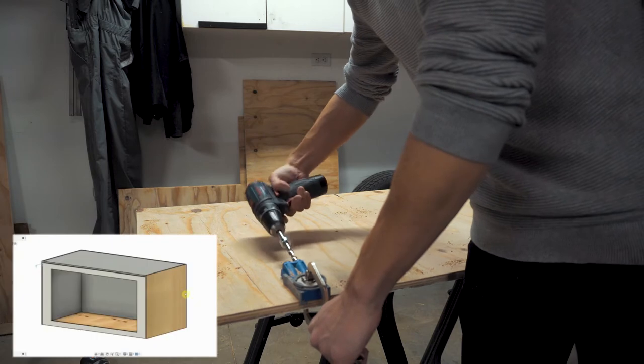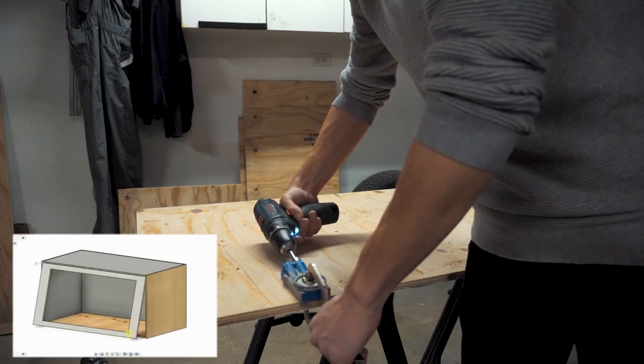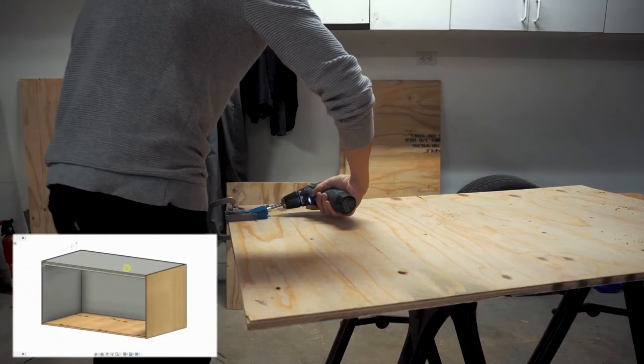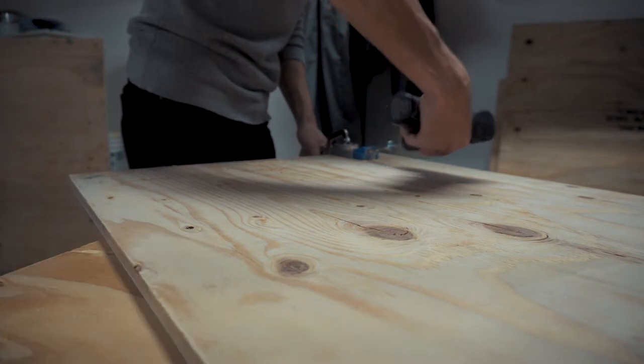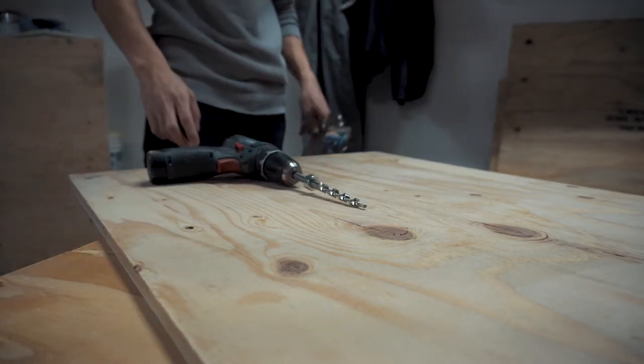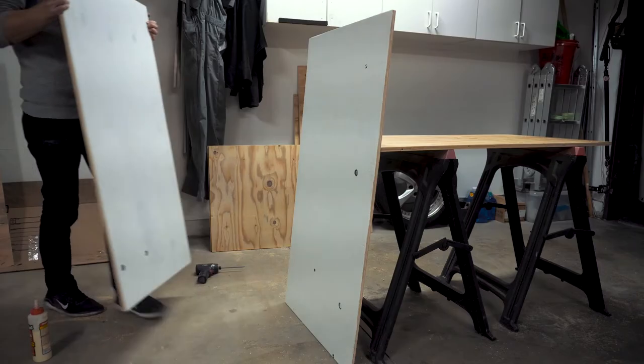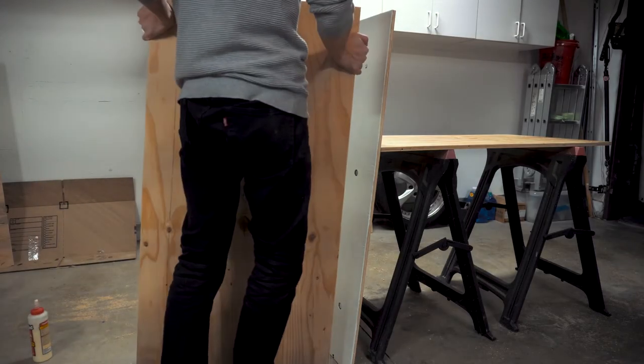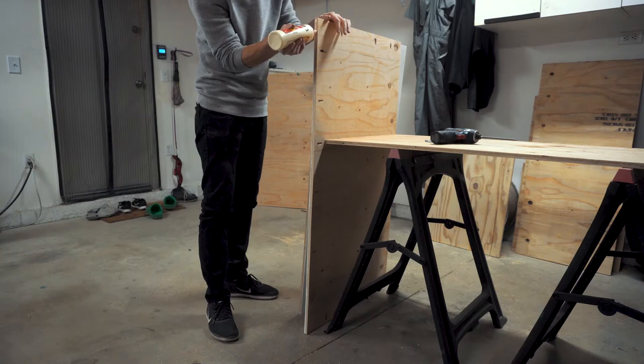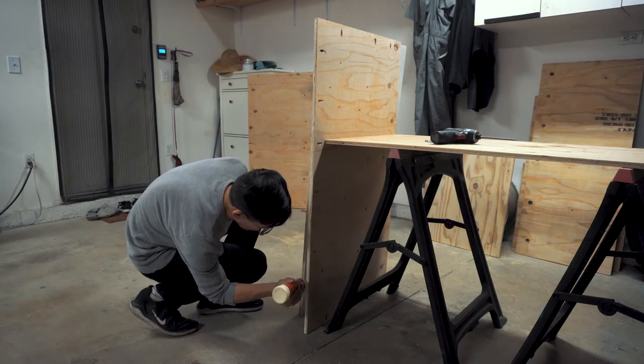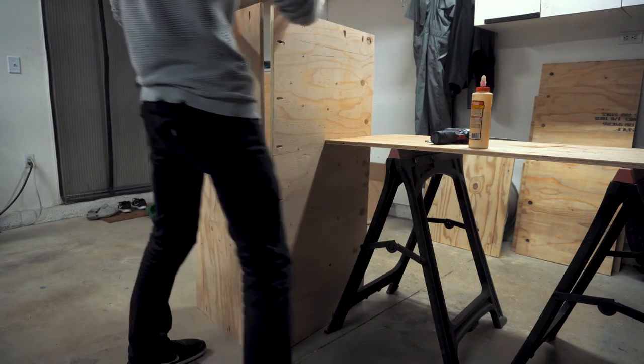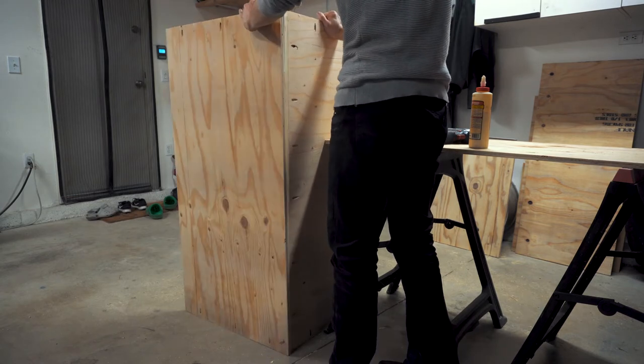The first draft of our design included a front door that could swing up and slide into a pocket at the top of the box. We quickly learned that our choice of lower-grade plywood and our mediocre woodworking skills prevented us from realizing the potential of that design. We have a link to download the Fusion 360 file for those of you who want to tackle the design.